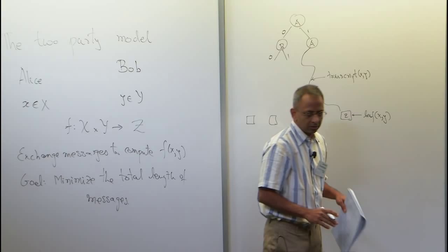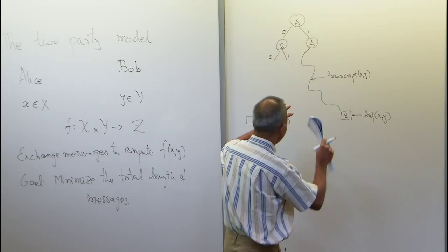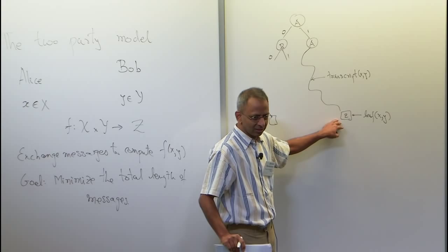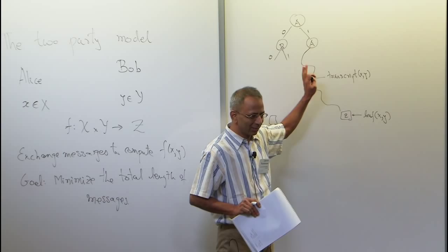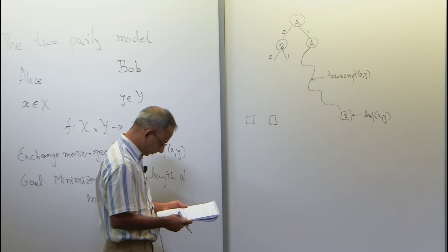This is a tree, so the leaf also is essentially the transcript. We'll just pretend that the transcript is the whole path. So the leaf encodes all decisions made along the way.